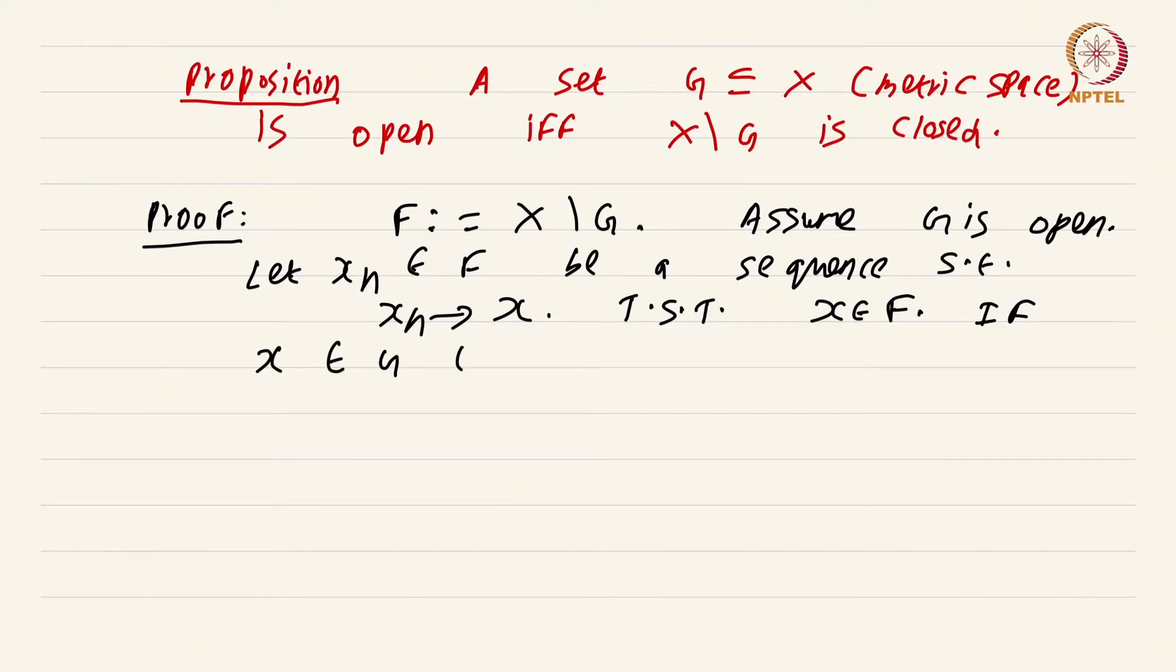If x is in G, then for some r greater than 0, B(x,r) is a subset of G. That is just because this set G is an open set. Therefore x must be an interior point. Therefore we can find a ball such that B(x,r) is fully contained in G.